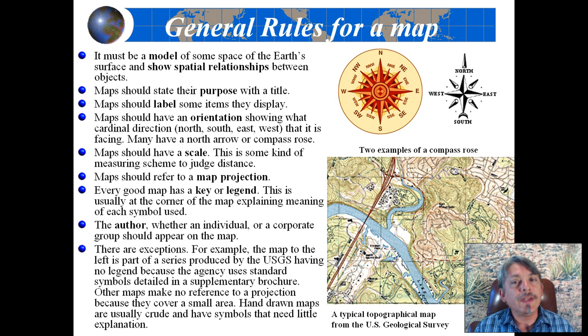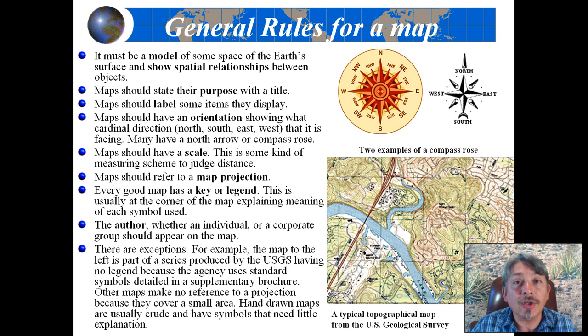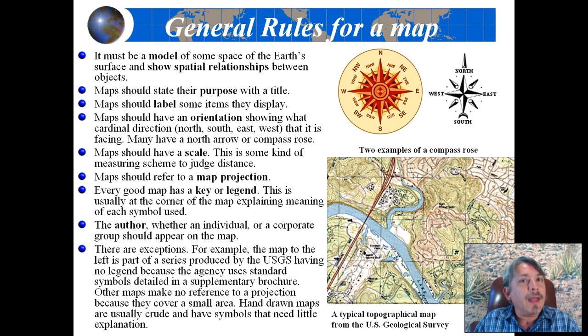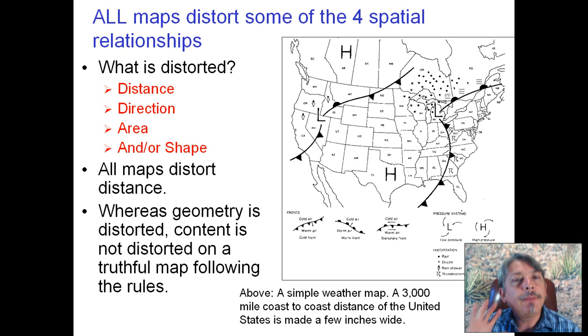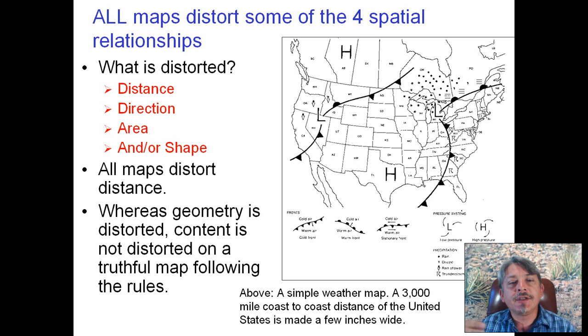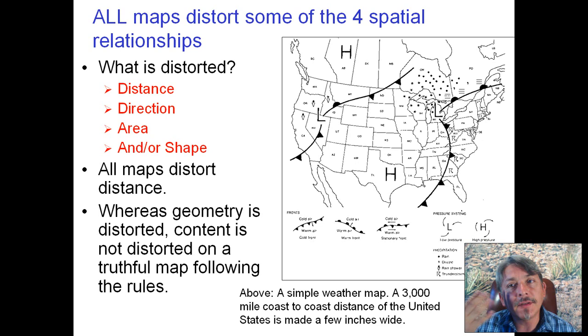All of these rules have exceptions with special reasons. Basically, if you make a hand-drawn map on a napkin to give someone directions to your house, you can conceivably leave out certain rules — but it is much better to understand these rules, because you will draw better maps, even on napkins, if you know them. When we produce a map, we cannot help but distort the four spatial relationships of distance, direction, area, and shape. An honest and good map is going to distort the geometry, but it's not going to distort the content — that's the important rule to remember.